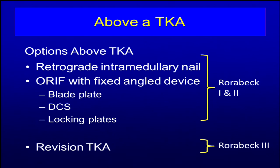According to the Rohrbeck classification system, you have a couple of options above a knee replacement. Number one is a retrograde nail, which has been tried for 30 years. It became very popular, then sort of went away, and then as implant design and techniques improved, the retrograde nail is definitely back and very useful in a number of situations. The other option is ORIF with a fixed angle device. Modern locking plates are very commonly used for these, probably more common than nails, although that may be trending back in the other direction. Blade plates and dynamic condylar screws have been used, but mostly modern locking plates.